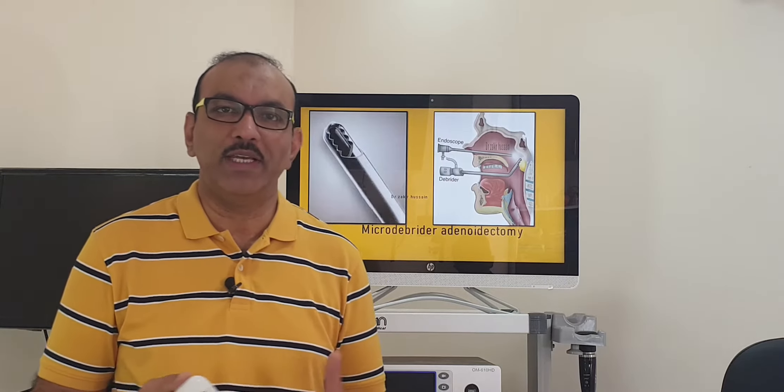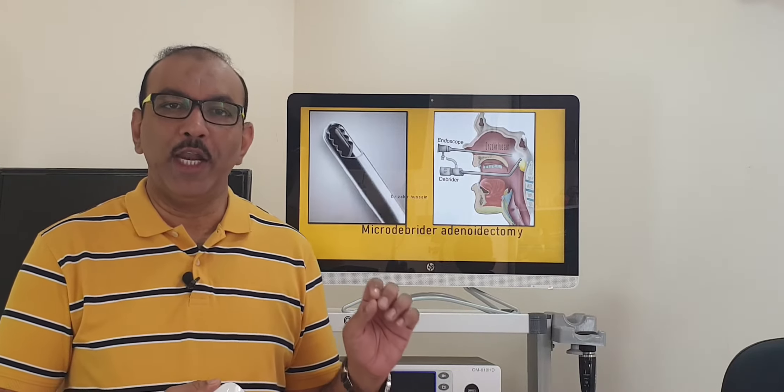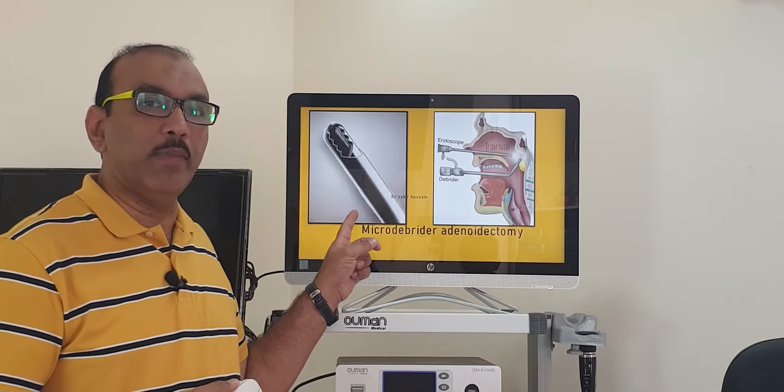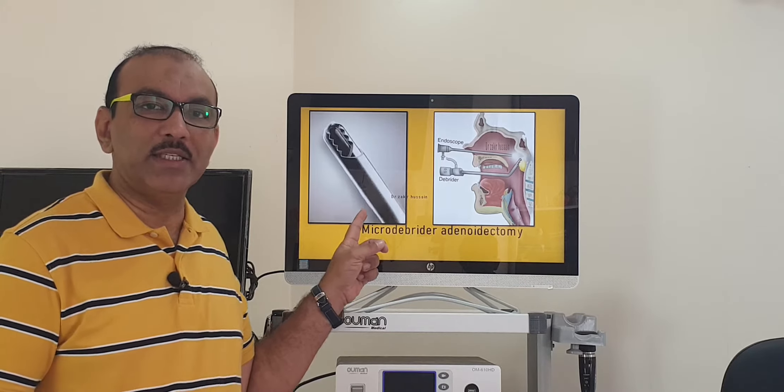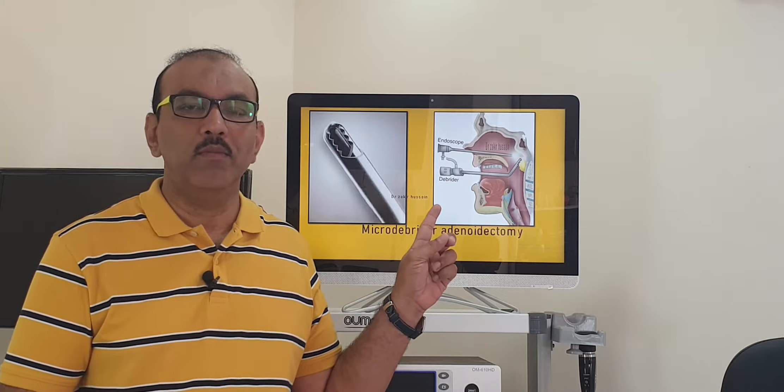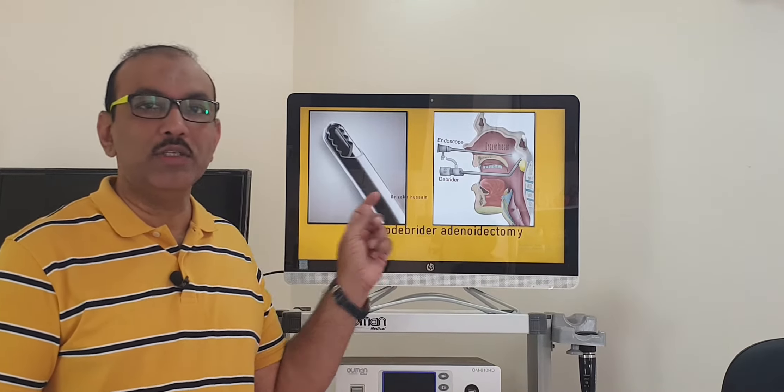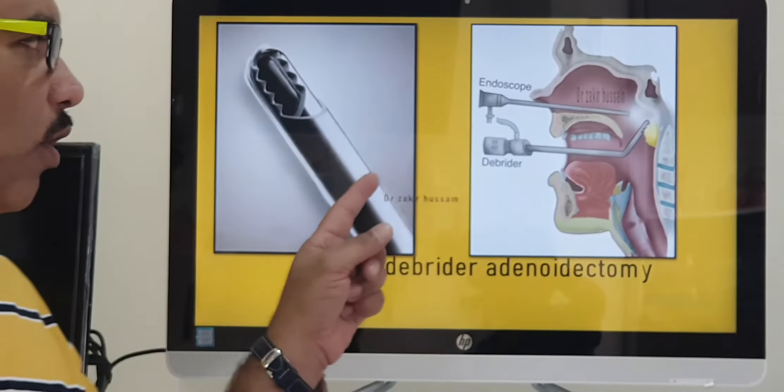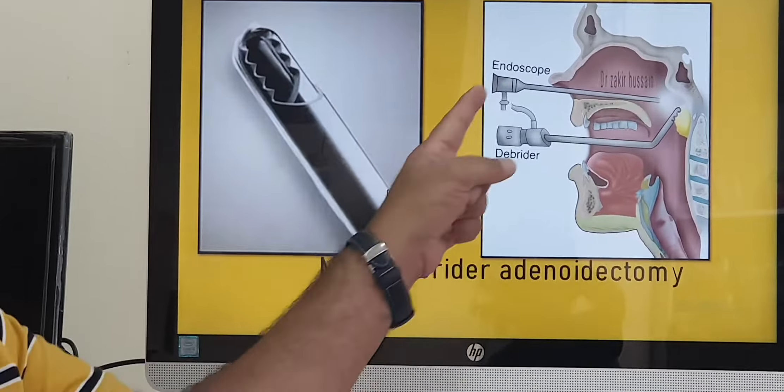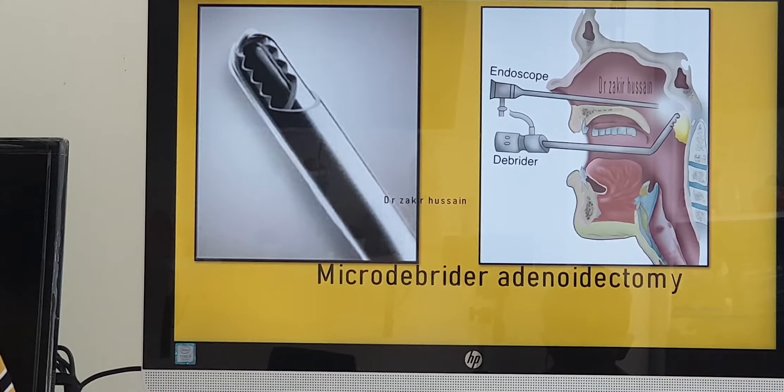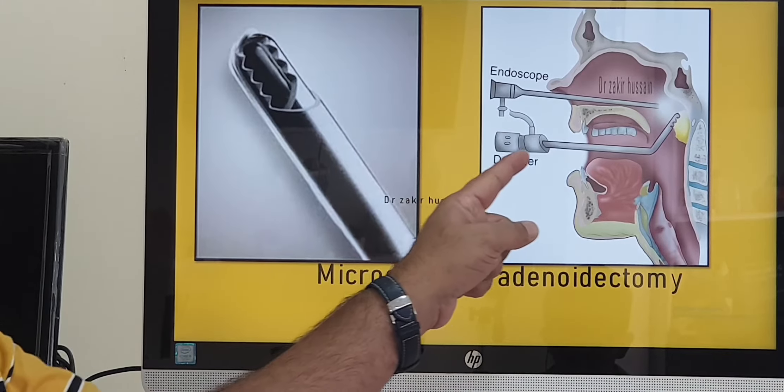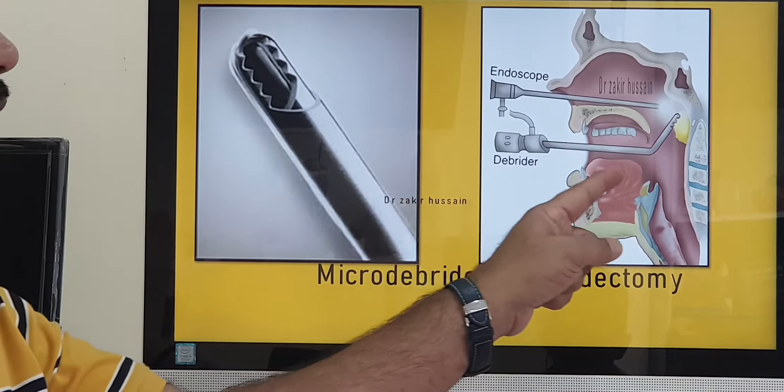One step ahead with new techniques, we can remove the adenoids with the help of a microdebrider. The blade looks like this. Here what we do is we have to have a better visualization of the part behind the nose, the adenoids. We introduce an endoscope through the nose and the debrider per orally. This debrider has got teeth, it keeps on oscillating when we press the pedal.